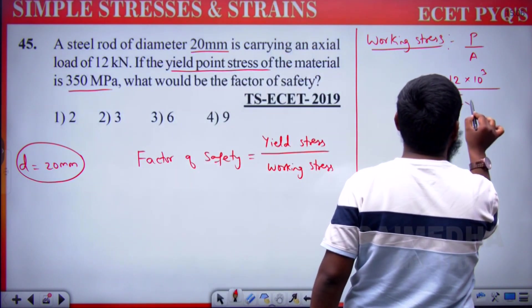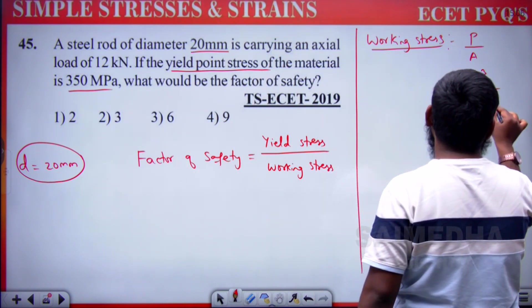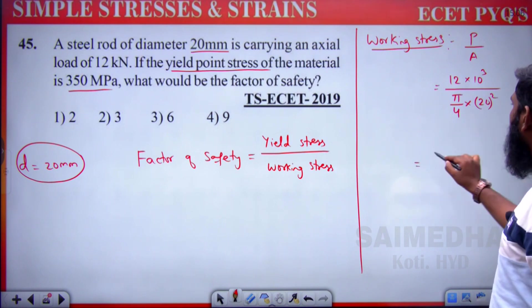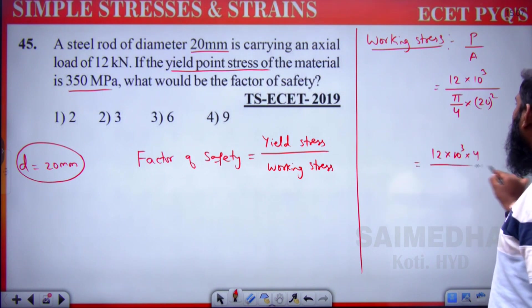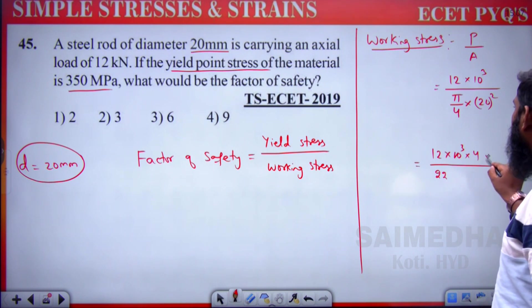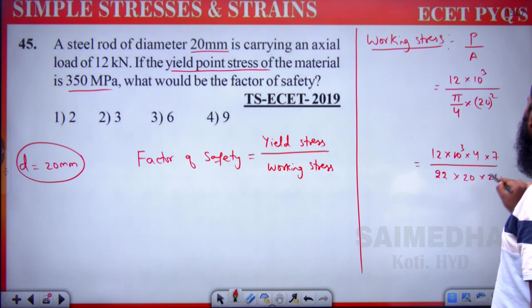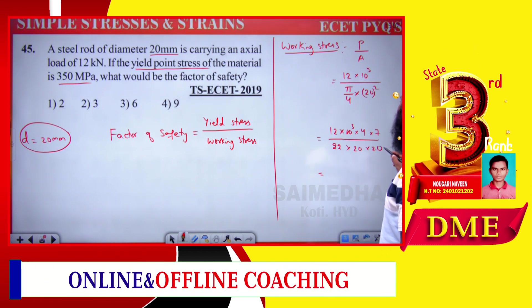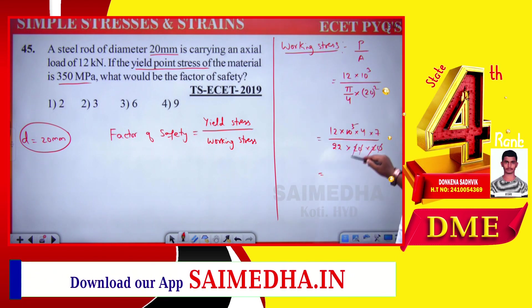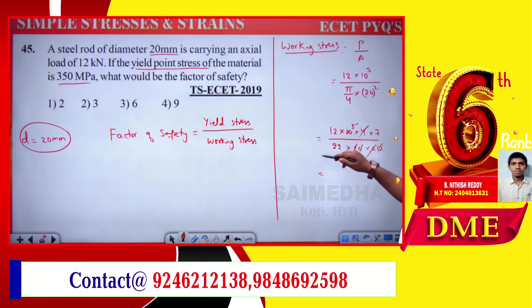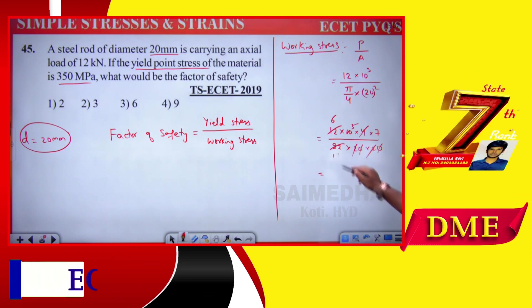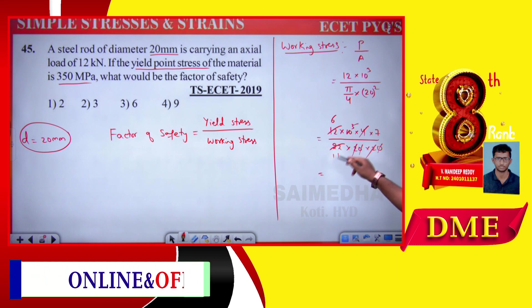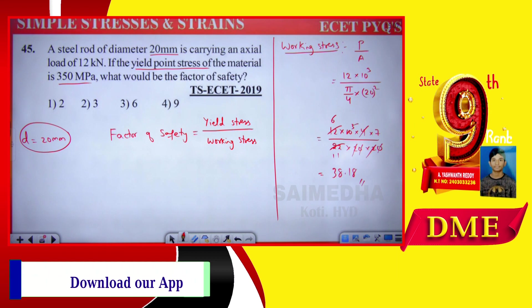Expanding: numerator = 12 × 10³ × 4; denominator = (22/7) × 20 × 20. After cancellations — zeros, 4, and 2s cancel — we get 420/11 = 38.18 Newton per mm square working stress.